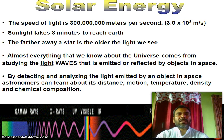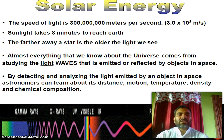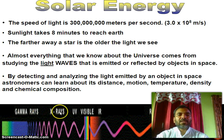Almost everything that we know about the Universe comes from studying the light waves emitted or reflected by objects in space. By detecting and analyzing the light emitted by an object in space, astronomers can learn about its distance, motion, temperature, density, and chemical compositions. The electromagnetic spectrum includes gamma rays, X-rays, UV, visible, IR, and radio waves.